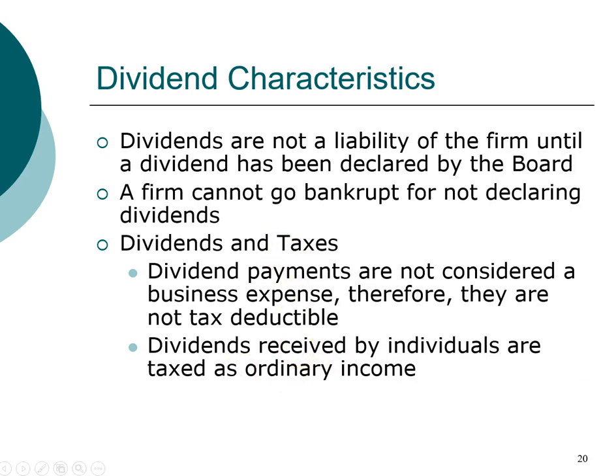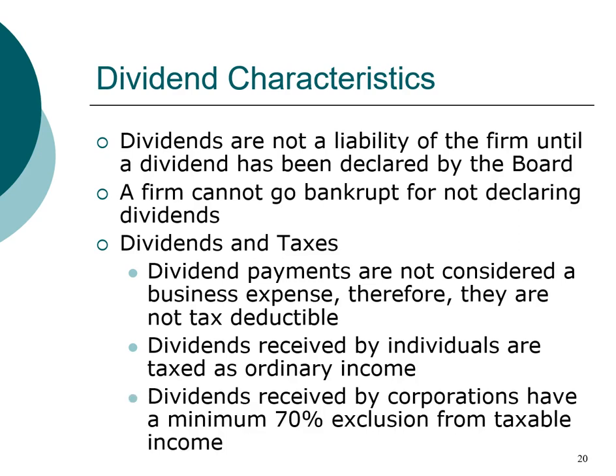Because of double taxation, if a company owns shares of stock in another company, the same dollar of income can be taxed multiple times. For example, if a subsidiary is its own corporation, the income can be taxed multiple times. Therefore, corporations have an exclusion, meaning that 70 percent of the dividend income received from another corporation is not subject to tax.